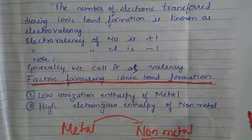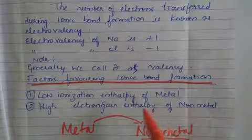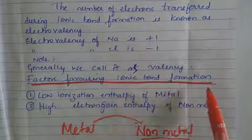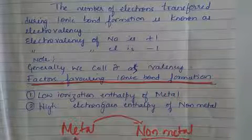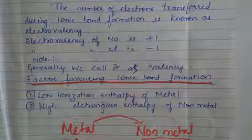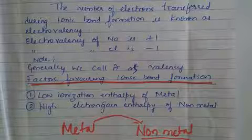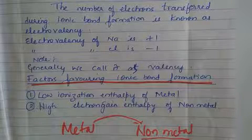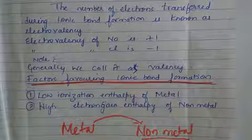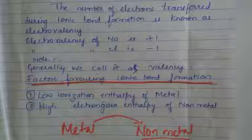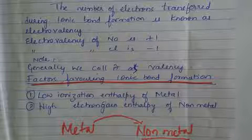The two factors which determine ionic bond formation are: low ionization enthalpy of metal, and high electron gain enthalpy of non-metal.